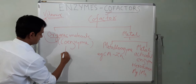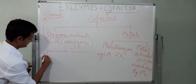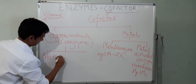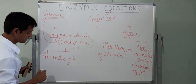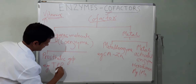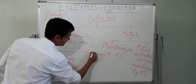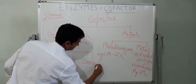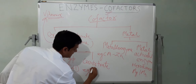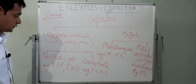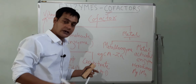For organic molecules: if the organic molecule is tightly bound to the enzyme, it is known as a prosthetic group — for example, thiamine pyrophosphate or flavin adenine dinucleotide (FAD). If the organic molecule is loosely bound, it is known as a co-substrate — for example, NAD (nicotinamide adenine dinucleotide). It is called a co-substrate because, like a substrate, the molecule attaches to the enzyme and is then released.